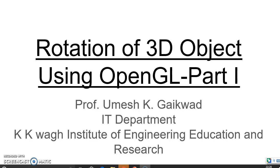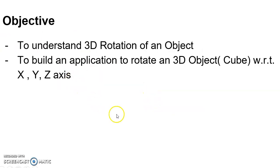Today we will see how to implement rotation of 3D objects using OpenGL assignment. Before starting the assignment, we will check the objectives of today's assignment. We have two objectives. First is to understand 3D rotation of an object, and second is to build an application to rotate a 3D object, i.e. a cube, with respect to X, Y and Z axis.